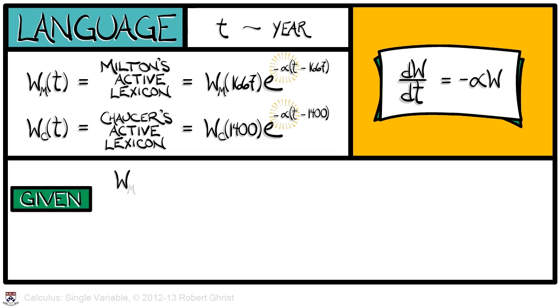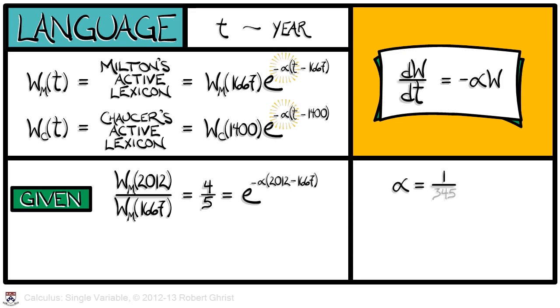Now, what is it that we are given? We are told that the number of words from Milton's time in common use today, let's say in 2012, is 80% of those originally available. Plugging in the solution to the differential equation for w sub m when T equals 2012, and then dividing by the initial condition gives us a single equation that has only alpha as an unknown. We can therefore solve for alpha, and we get a quantity that is about 6.5 times 10 to the negative 4.